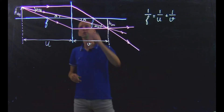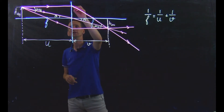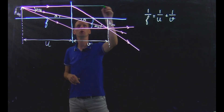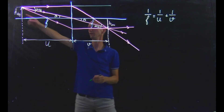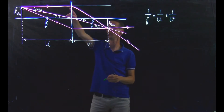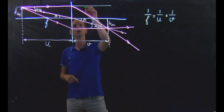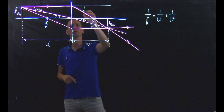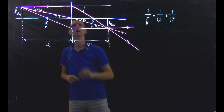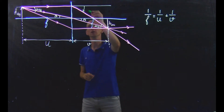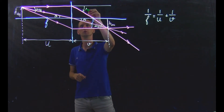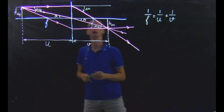Further, we see that the action of the lens on a ray traveling towards the lens plane parallel to the axis is to give this ray an angular deviation, which we indicate by delta alpha.